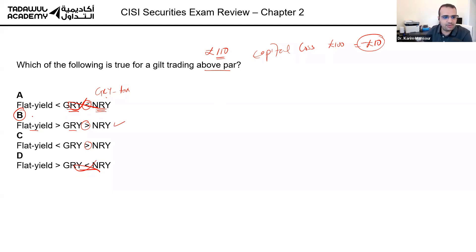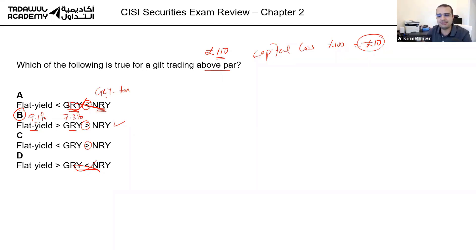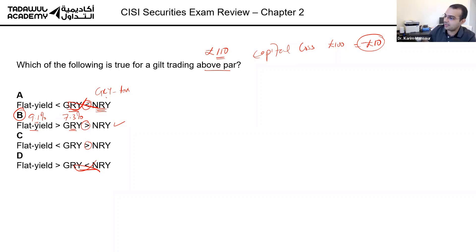In our previous example, the flat yield was 9.1 percent and the gross redemption yield was 7.3 percent — it was less because it absorbed that capital loss. Naturally, the gross redemption yield is higher than the net redemption yield because of tax. So the answer is B. Only one person got it right.